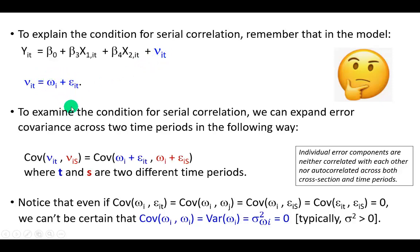Now, to examine the condition for serial correlation, as I write here, we can expand the covariance between error terms in two time periods, color coding them to be the blue time period and the red time period, expanded in this manner.